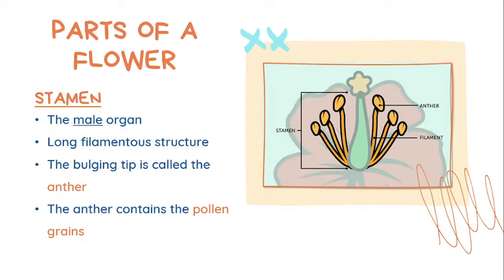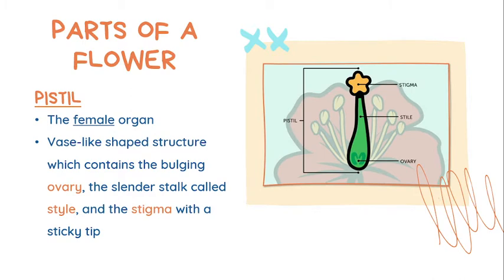Now let's go to the male and female parts of the flower. For the male organ, it is called the stamen. In the stamen, we can find a long filamentous structure — the bulging tip of that is called the anther. In the anther, we can find our pollen grains. The long filamentous structure is called the filament. For the female organ, the collective term is pistil. The pistil is a vase-like shaped structure which contains the bulging ovary, commonly found at the bottom part, also the slender stalk which is our style, and the stigma, which has a sticky tip found up top.